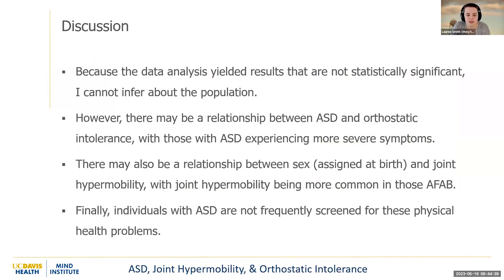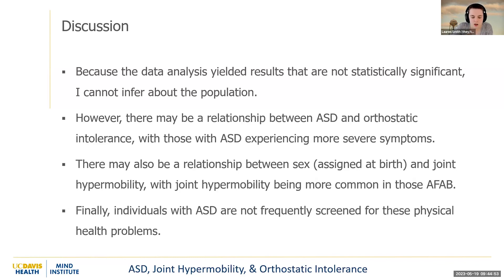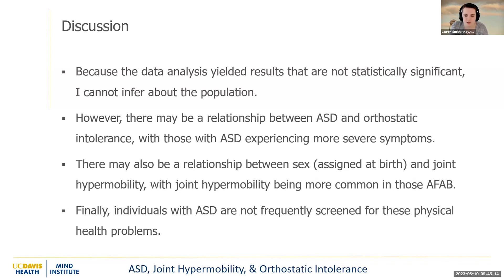Because the data analysis yielded results that are not statistically significant, I cannot infer about the population. However, from our data, there may be a relationship between autism and orthostatic intolerance, with those with autism experiencing more severe symptoms. There may also be a relationship between sex assigned at birth and joint hypermobility, with joint hypermobility being more common in those assigned female at birth. Finally, individuals with autism are not frequently screened for these physical health problems.